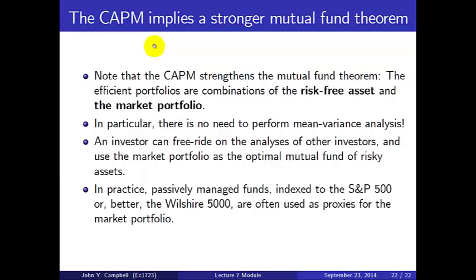The CAPM implies a stronger form of the mutual fund theorem: now we know the identity of both efficient portfolios. All efficient portfolios are combinations of the risk-free asset and the market portfolio, so all investors need just two mutual funds — a money market fund and a market index fund — with no need to perform mean-variance analysis. Any investor can free ride on the analyses of others and use the market portfolio as the optimal risky fund. In practice, passively managed funds indexed to the S&P 500, or broader indexes like the Wilshire 5000 or a global index, serve as proxies. This logic underpins the frequent advice from finance professors that investors should invest passively in these indexes and combine them with cash as their preferences dictate.